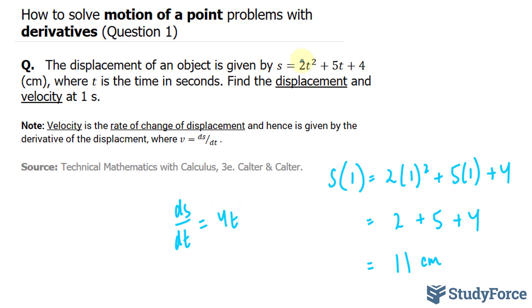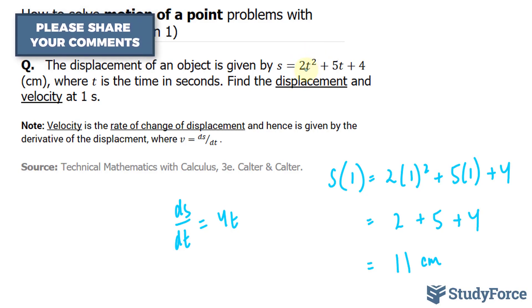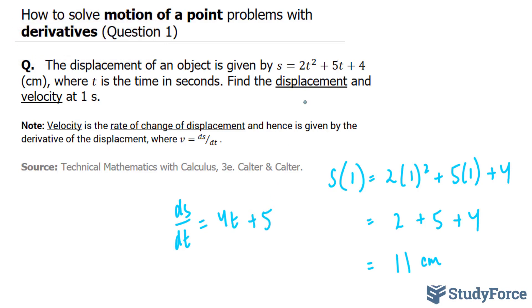4t. I'm using the power rule. I take this 2, multiply it to the 2, and subtract this by 1, plus 5. The derivative of 5t is 5, and the derivative of 4 is 0.